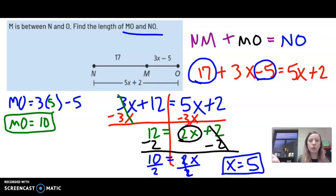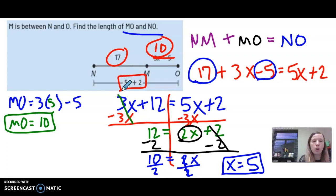Now let's do NO, which is the entire thing. Now there are two ways to go about it. We can use the answer we just got. If we know MO is 10 units, 17 plus 10 is 27.